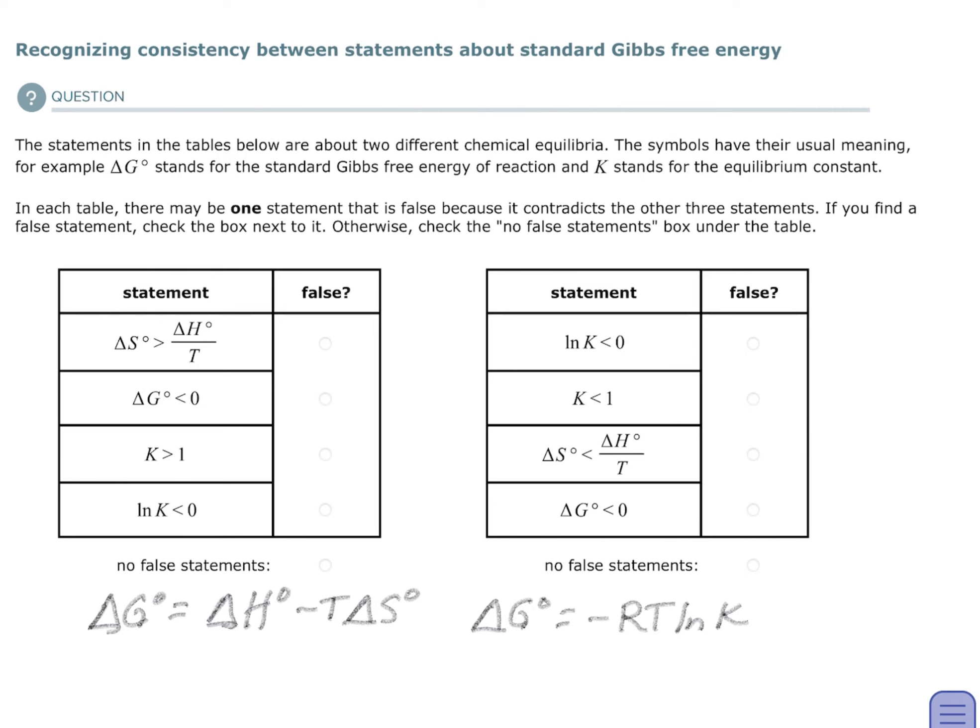So first I wrote down the two formulas that I know, the thermodynamics formulas that have Gibbs free energy in them. The first one relates enthalpy, entropy, and temperature. And the second one relates the available energy or the free energy to the equilibrium constant.